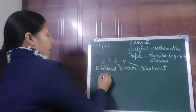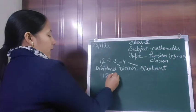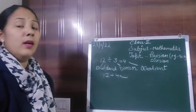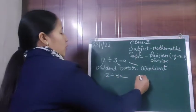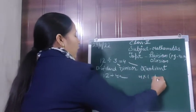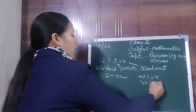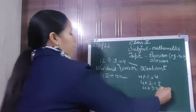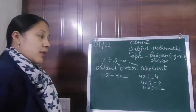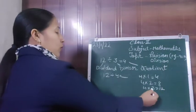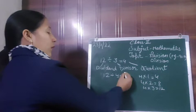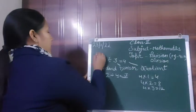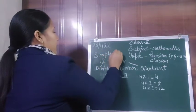So children, let's take one more example. Here we have 12 divided by 4. To get the answer, we will count the table of 4. So 4 ones are 4, 4 twos are 8, 4 threes are 12. So here we will write answer 3. This is called simple division.